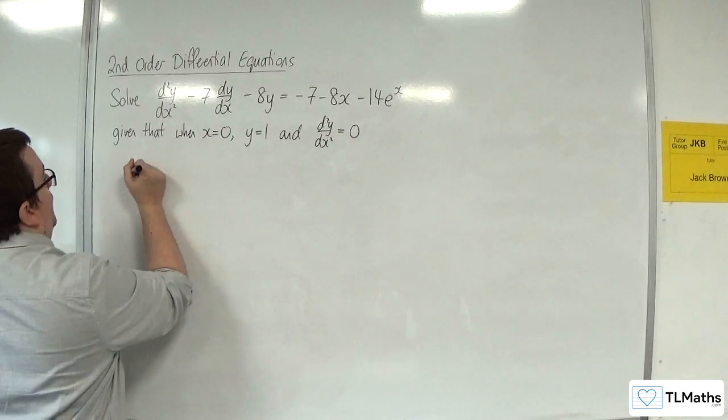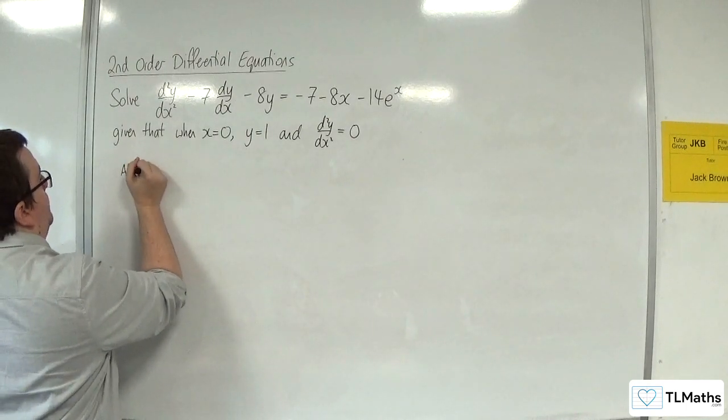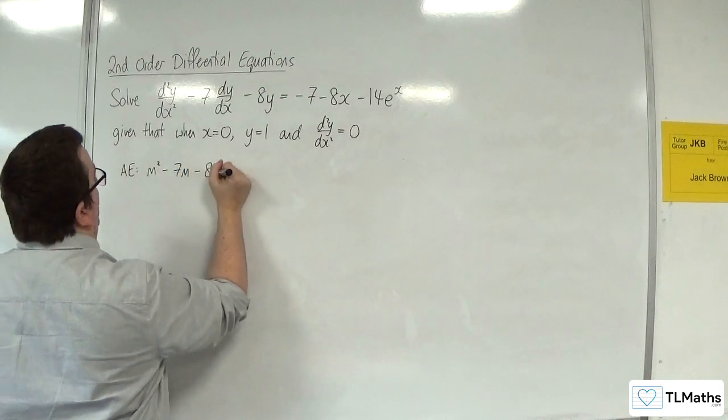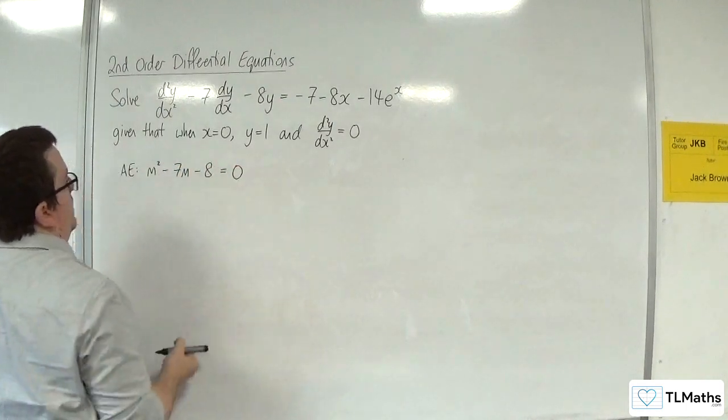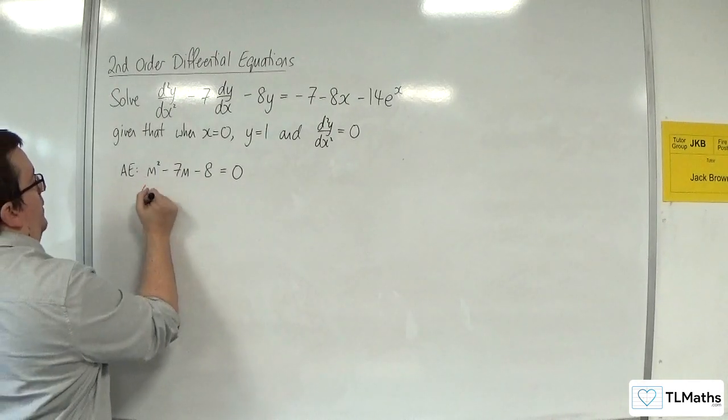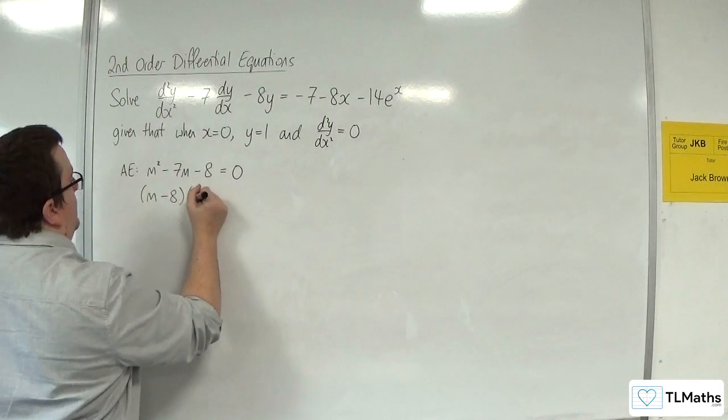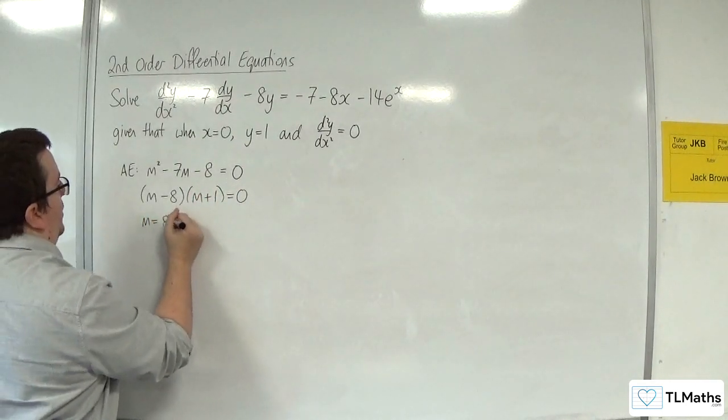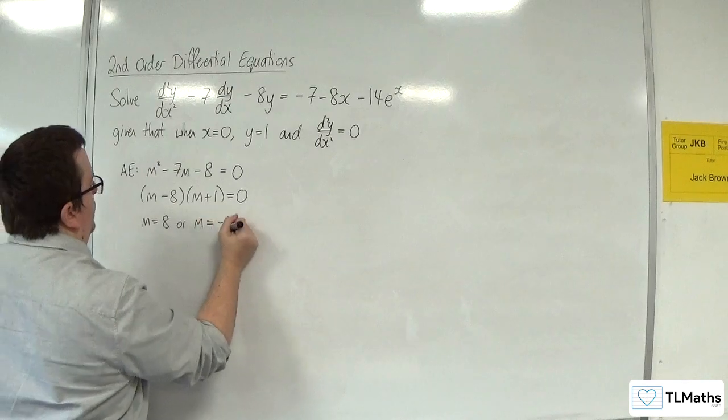So first of all, we'll find the auxiliary equation, which is m² - 7m - 8 = 0. This can factorize to (m - 8)(m + 1) = 0, so either m is equal to 8, or m is equal to -1.